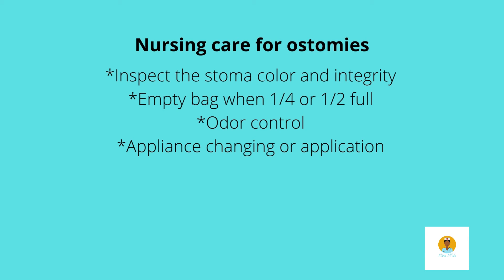The patient can use a breath mint in the bag to decrease odor, and it is also advisable to avoid foods that cause bad odor, like eggs. When changing the appliance — the colostomy setup — we cut the opening in the skin barrier no more than one-eighth of an inch bigger than the stoma. We don't want to strangulate the stoma, but we also don't want an oversized opening. Always measure the patient's stoma before cutting the appliance.